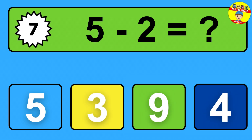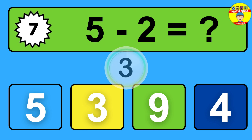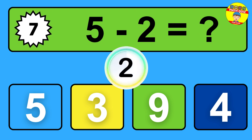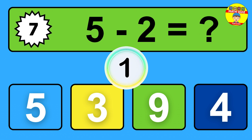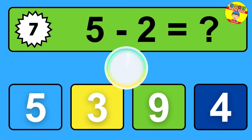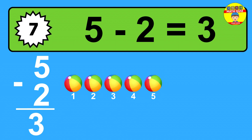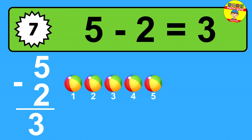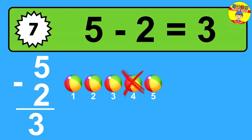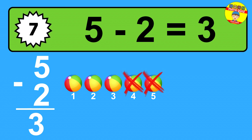Question seven: five minus two equals what? The answer is five minus two is three. Let's count it: one, two, three.